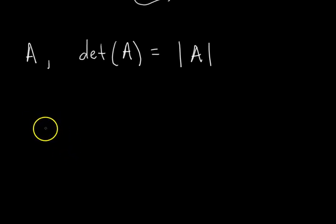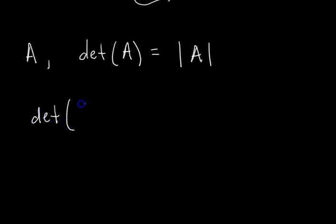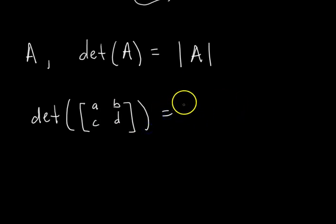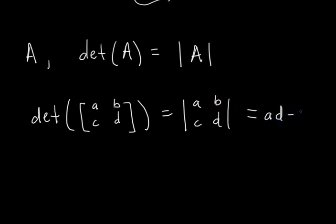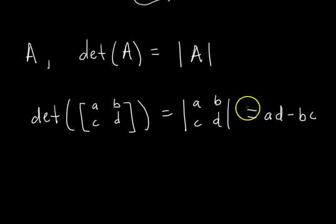If you don't know, I'll teach you quickly because you need to know this for cofactor expansion. The determinant of some two-by-two matrix with entries A, B, C, D — written with the vertical bars — is just equal to the product along the main diagonal minus the product along the other diagonal. So it's just A·D minus B·C. Notice this is just a number. Determinants are just numbers — they're not matrices. The determinant of a matrix is just a scalar.